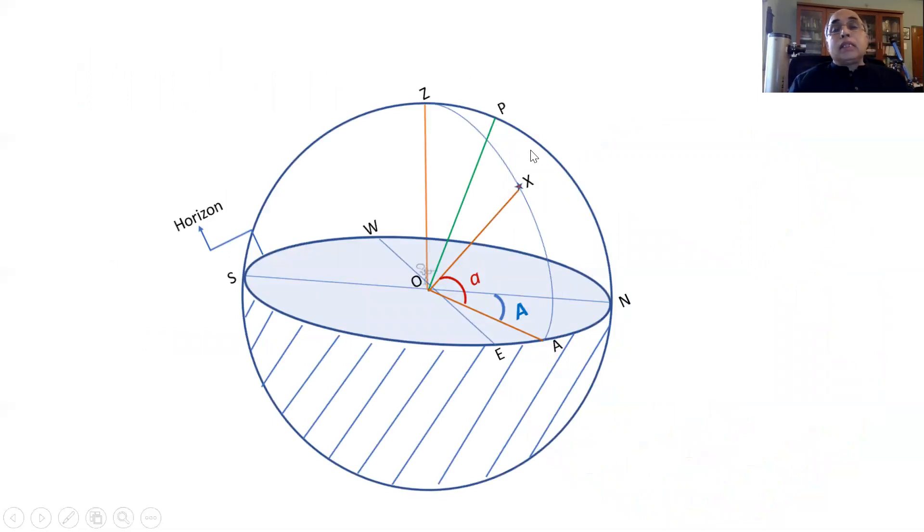The latitude of the place: here I have P which gives me the position of Polaris the polestar, and if my location, this angle from horizon to P should be the latitude of the place.